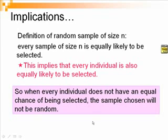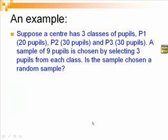Let us see how we can use this result to solve a problem. Suppose the centre has three classes of pupils, P1, P2, and P3, with 20, 30, and 30 students respectively. A sample of nine students is to be chosen, and that is by selecting three from each class. Is the sample chosen a random sample?